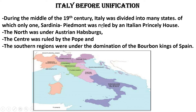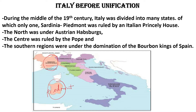During the middle of the 19th century, Italy was divided into many states, of which only one — Sardinia Piedmont — was ruled by an Italian princely house. You can see the orange part in the map; this part is Sardinia Piedmont. The upper part is Sardinia and the lower part is Piedmont. These two parts together are called Sardinia Piedmont.